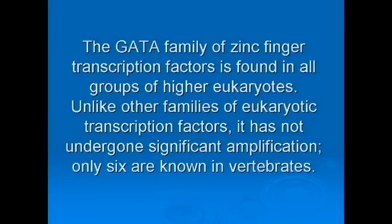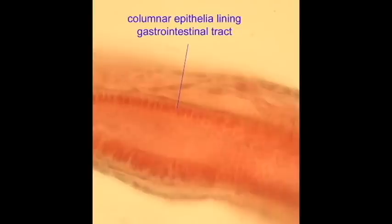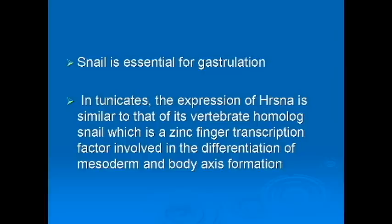There is a family of zinc finger proteins known as the GATA family, which is important in the embryonic development of endoderm, the digestive system, and in the heart, and also the development of blood cells in hematopoiesis.